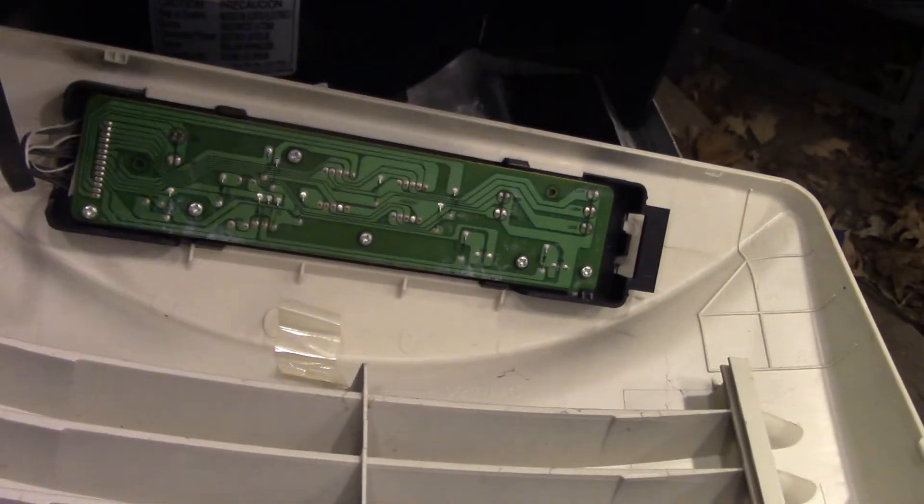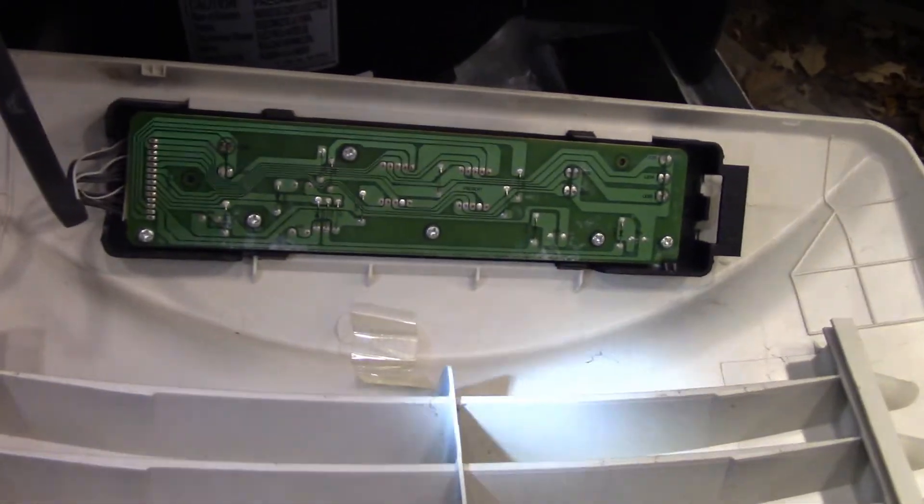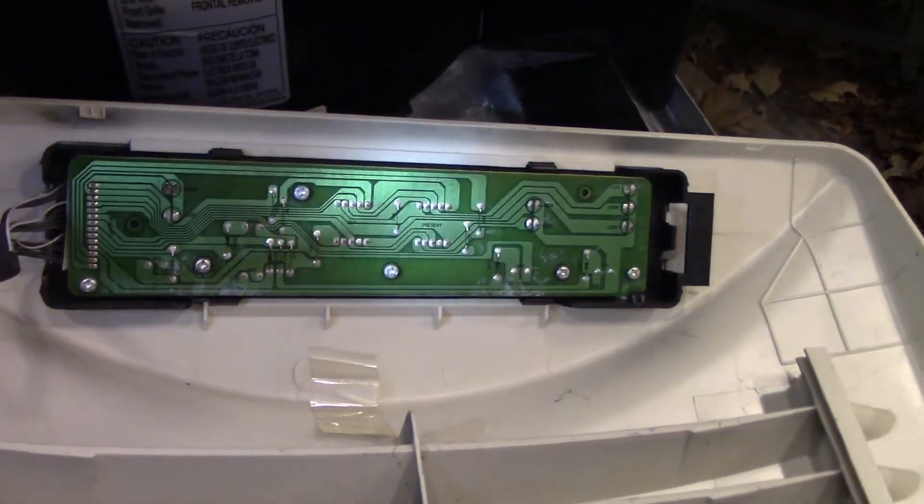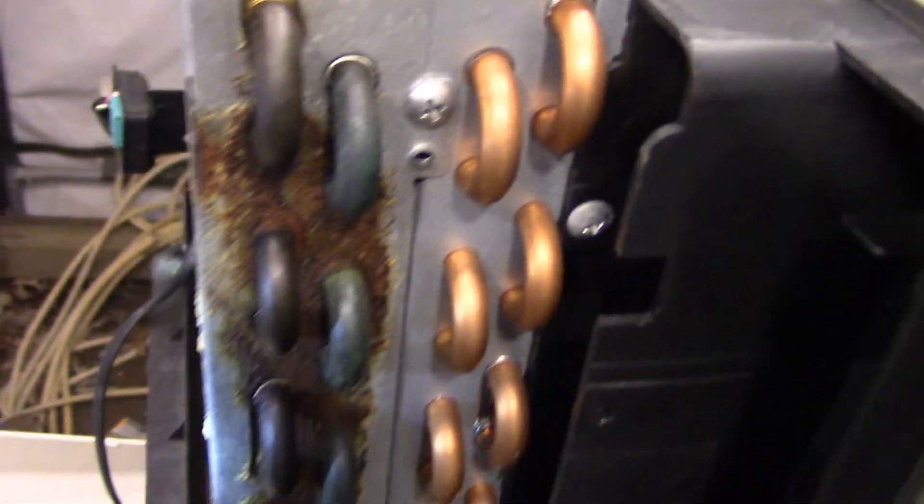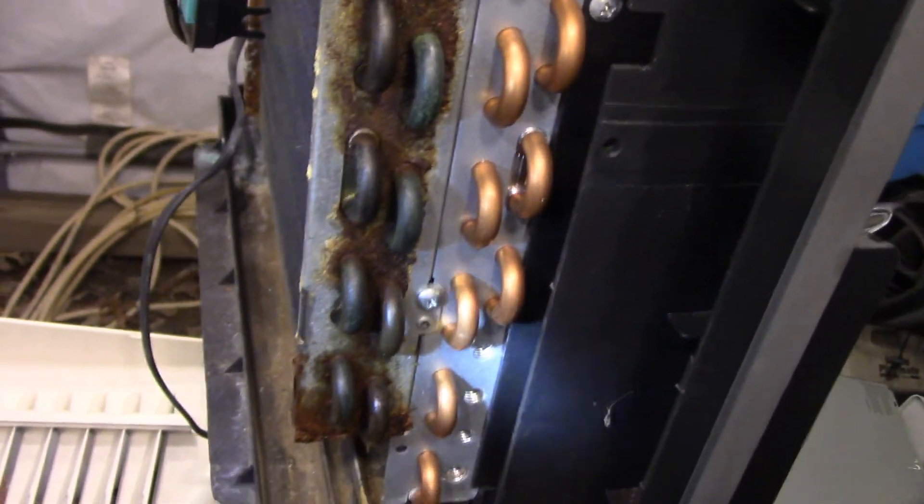That is the capacitor and where all the controls are that runs down to this control board here. It does not look to be too bad. It does not look like it has had any water damage or anything to it. There is some surface rust on that unit, but nothing that is really damaging that I can see.